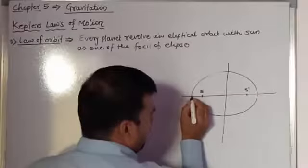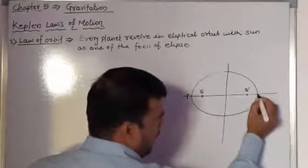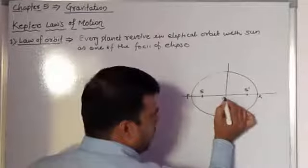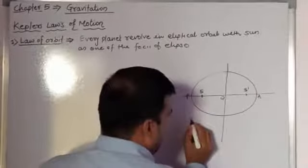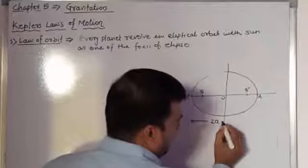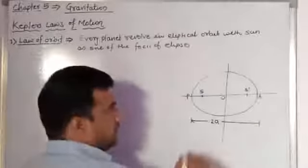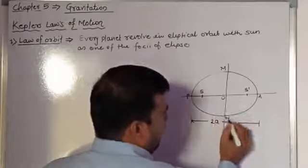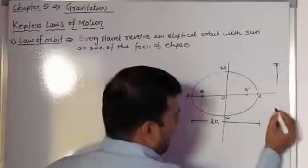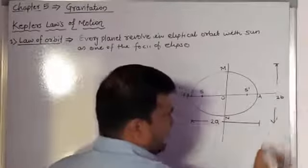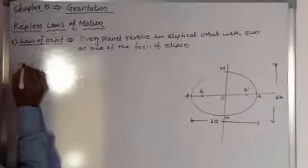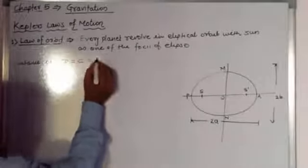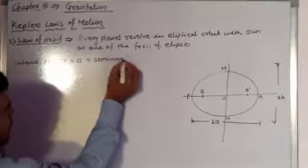Point P is at one end and A is at the other end, with O as the center of the ellipse. The distance P to A, represented by 2A, is called the major axis. The distance M to N, represented by 2B, is called the minor axis. The distance OA equals OP equals A, which is called the semi-major axis.